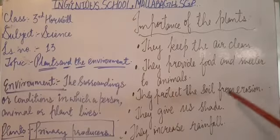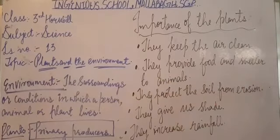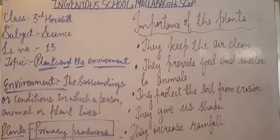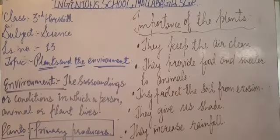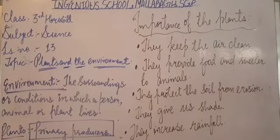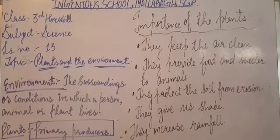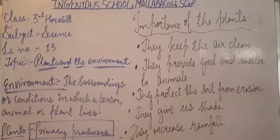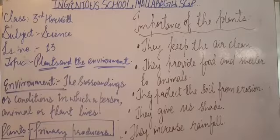Plants also protect the soil from erosion. The roots of the plants hold the soil tightly and firmly. When it rains, the soil does not erode because plant roots hold it firmly, and thus they help in preventing soil erosion. So plants protect the soil from getting eroded.